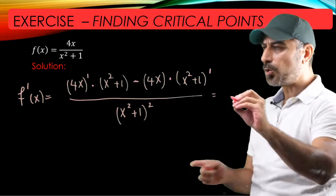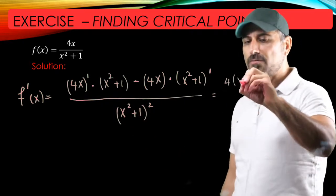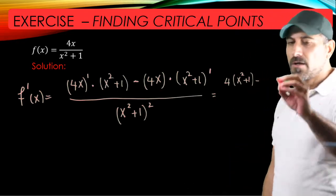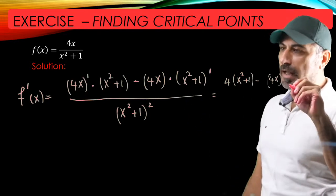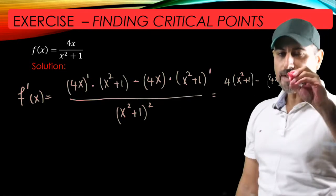Alright, so we have the derivative of 4x that's equal to 4. So 4 times x squared plus 1 minus 4x times the derivative of x squared plus 1. By using the power rule, this is just 2x.